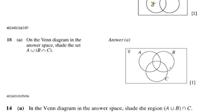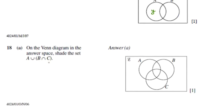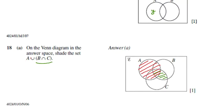We have a bracket here: A ∪ (B ∩ C). We are going to resolve the bracket first. B intersection C is everything common between B and C — that's this part here. Now this whole thing has to be combined with A using union. So we shade A entirely as well. Both of these combined — the B∩C region and everything in A — is what this whole set represents.